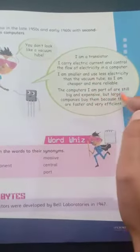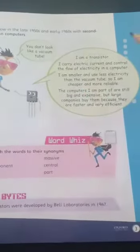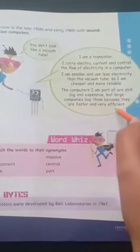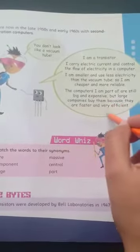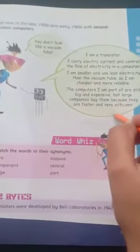The computers I am part of are still big and expensive, but large companies buy them because they are faster and very efficient. They are still in use. Why? Because they are faster and they perform their functions very efficiently and quickly.